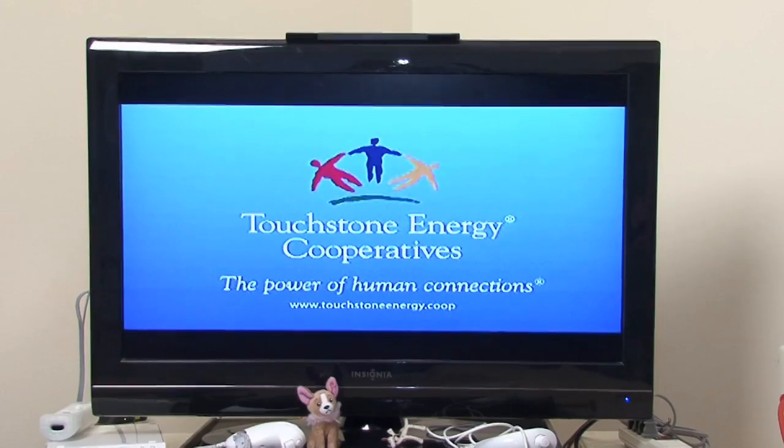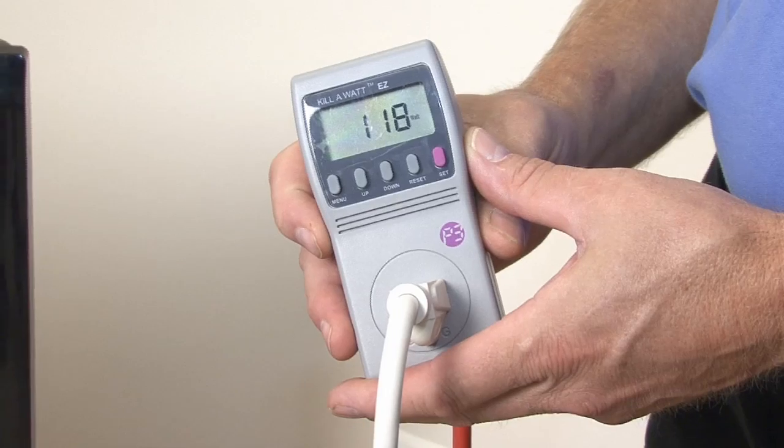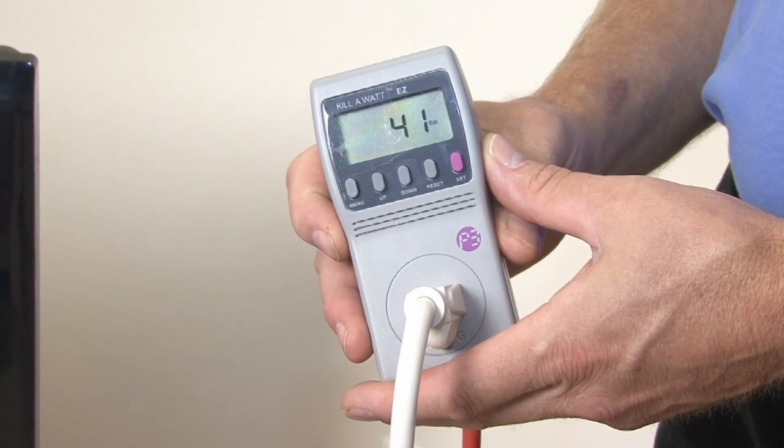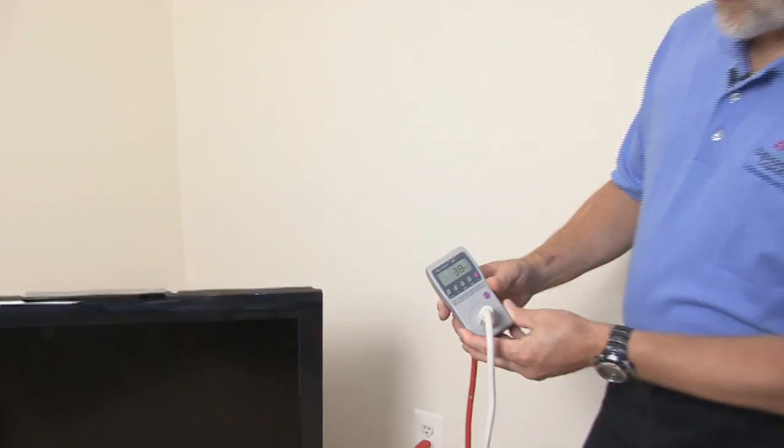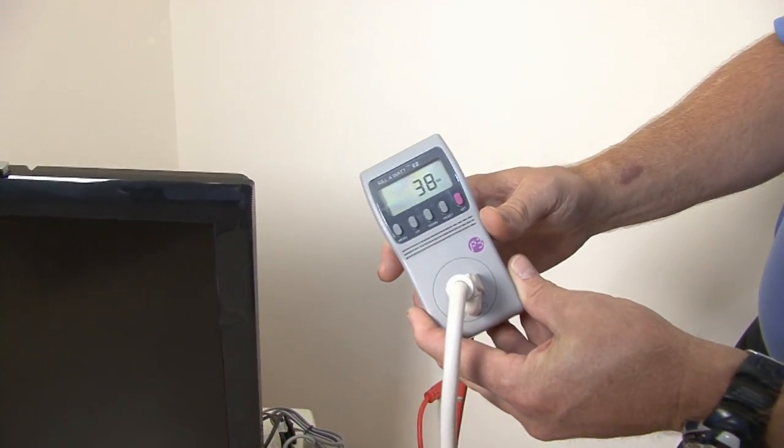Let's turn each of the devices off in series and see what the total energy consumption drops to. So first, let's turn the TV off. All right, we can see that we've dropped now to 38 watts. So that TV was using most of that electricity.